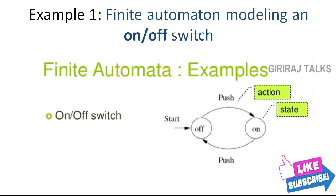In this example, we have named the states ON and OFF. Arcs between states are labeled by inputs which represent external influence on the system. Both arcs are labeled by the input PUSH, which represents a user pushing the button. The intent is that whichever state the system is in, when the PUSH input is received, it goes to the other state. One of the states is designated the START state — the state in which the system is placed initially. In our example, the START state is indicated conventionally by the word START and an arrow leading to that state.